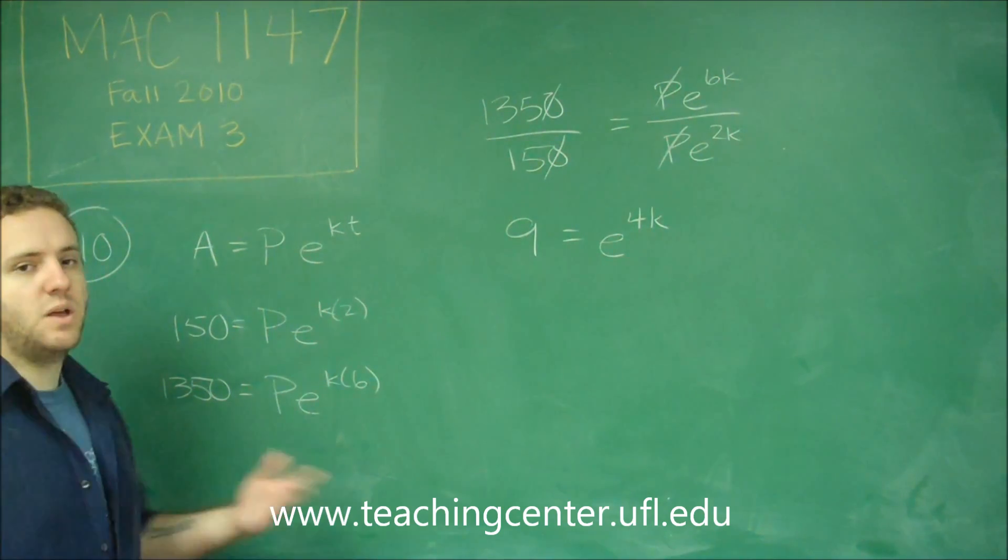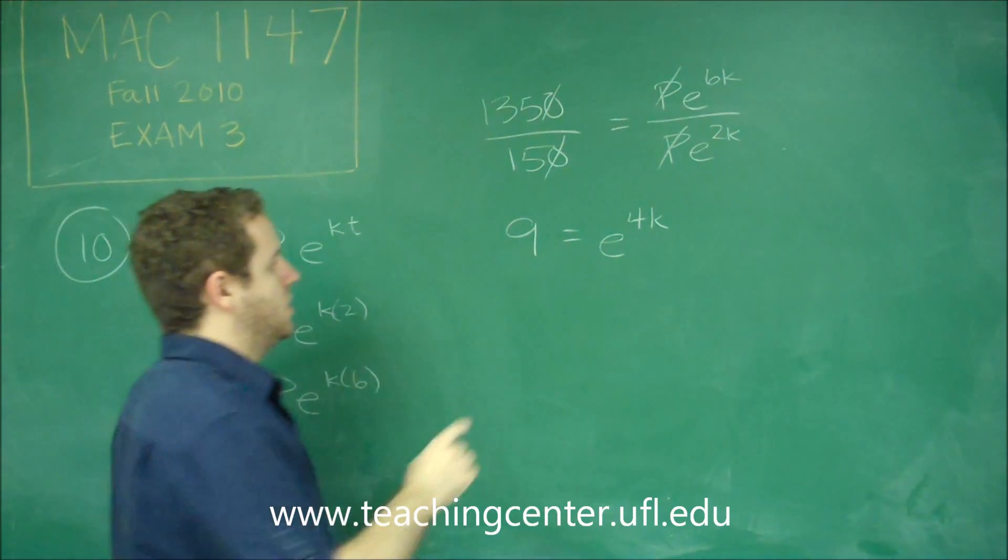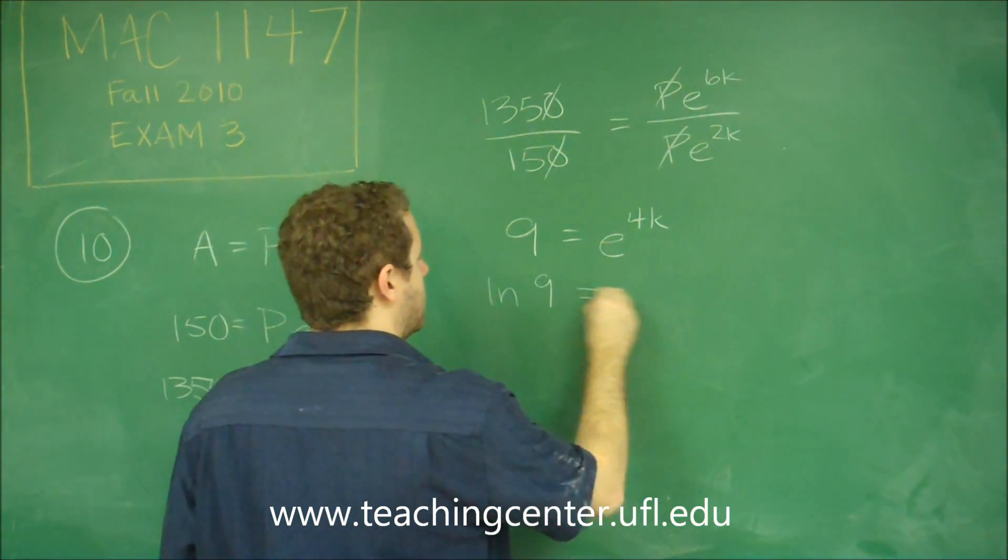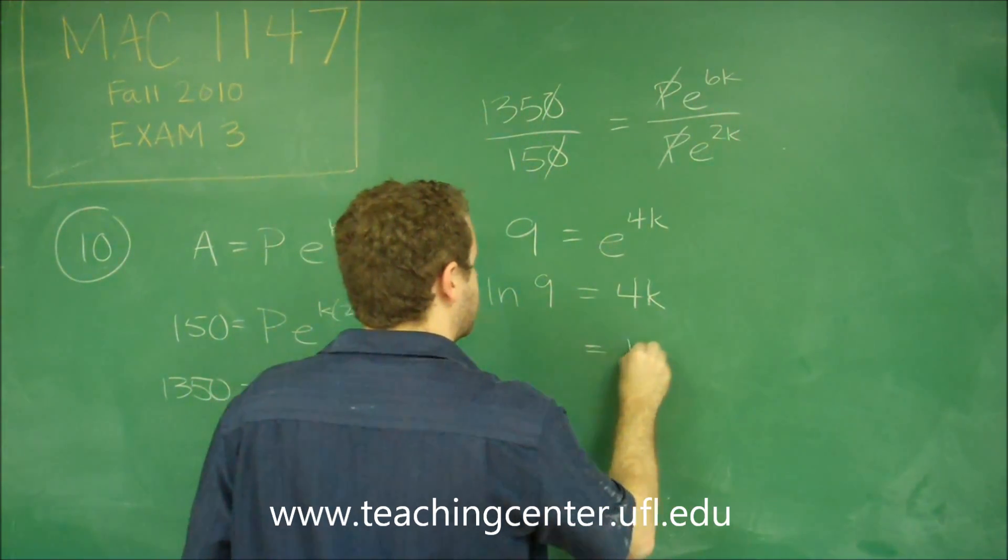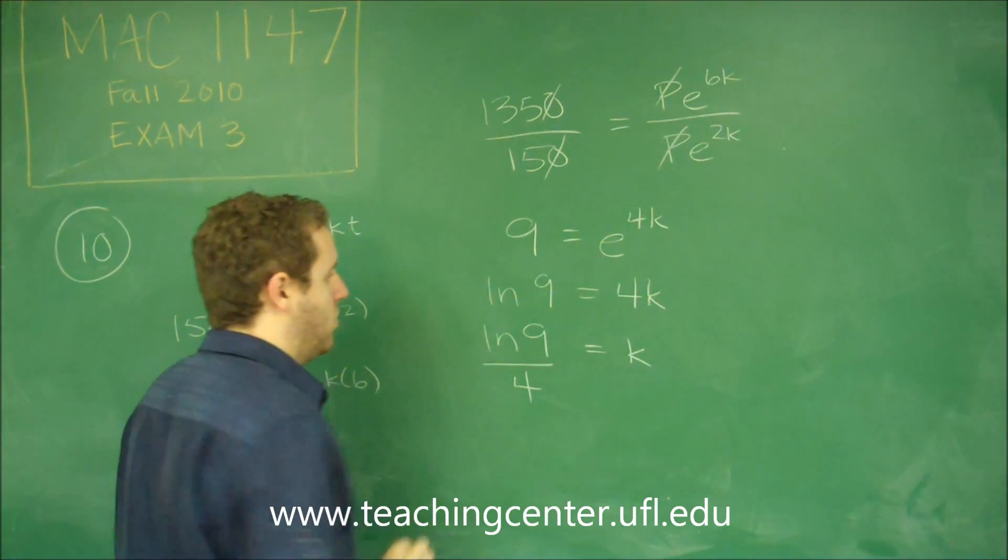Doing this, we can solve for K. And then once you have K, you can plug it in to get P. So, solving for K here, we have to do the ln of both sides. So we get that K is equal to ln 9 over 4.